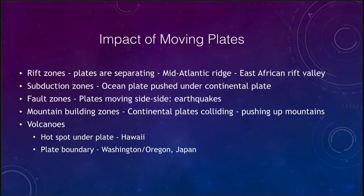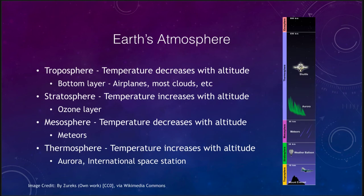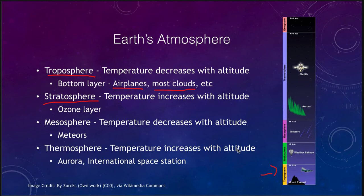Now let's look at the atmosphere of the Earth. The atmosphere is divided into a number of different layers. The troposphere is where pretty much most things occur for us — that is where airplanes are flying, where most of the clouds are present, and it is the very smallest layer, up to about 18 kilometers. Above that we have the stratosphere, where the temperature begins to increase. In the troposphere the temperature decreases as you go higher, but in the stratosphere the temperature actually increases. That is where the ozone layer is that protects us from ultraviolet radiation.